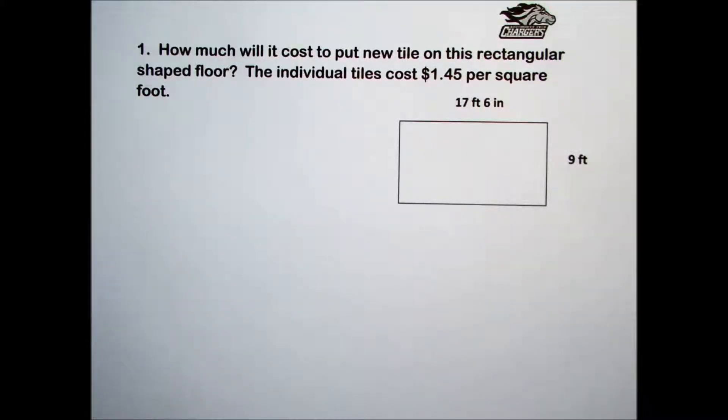Practice set 6, problem number 1. How much will it cost to put new tile on this rectangular shaped floor? The individual tiles cost $1.45 per square foot.